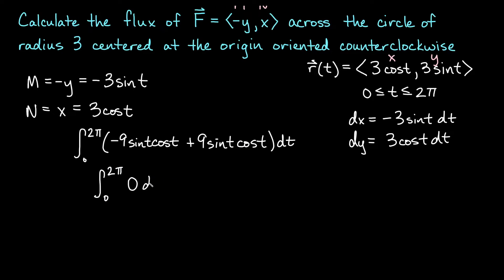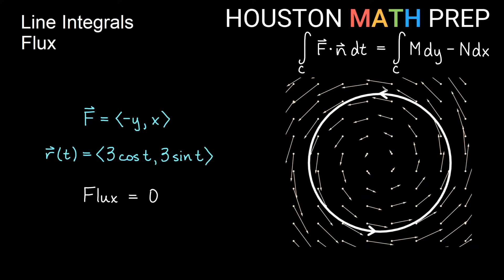The two terms add up to 0, so we have the integral from 0 to 2π of 0 dt, which gives us flux equals 0. Looking at the curve and the vector field together — the same circle but now with a rotational field — no flow is going to the right or left as we travel around; everything is simply moving in the same direction as the curve. So there is no outward or inward flow, meaning no flux.